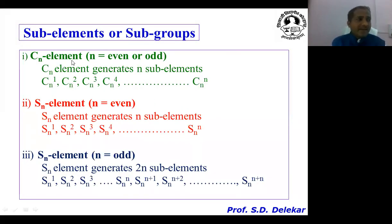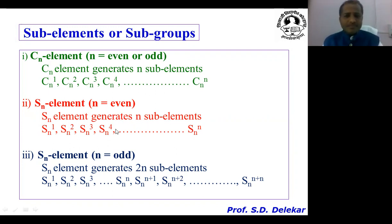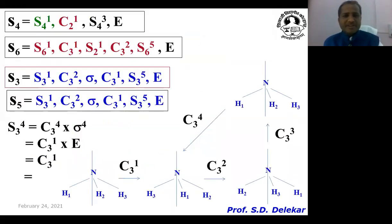This concludes the Cn element when n is even or odd. Now for the Sn element when n is even — similar to the Cn case — each Sn element generates n subelements from Sn¹, Sn², Sn³, Sn⁴, up to Snⁿ. For example, S4 generates 4 subelements: S4¹, S4², S4³, and S4⁴.